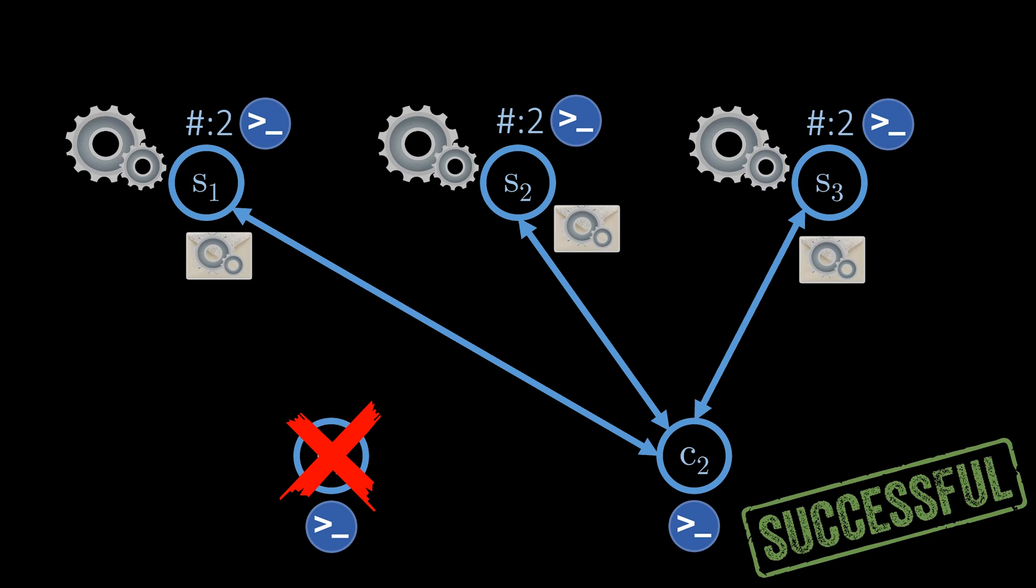Note that even if client 1 suddenly came back and sent out the request, all servers would still execute the same command. And this is how Paxos works.